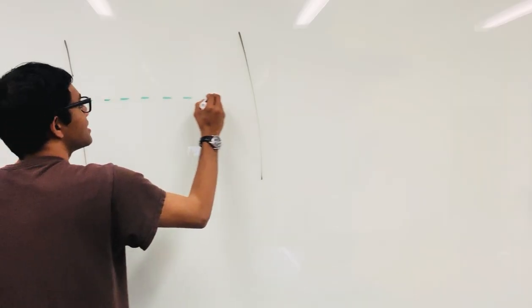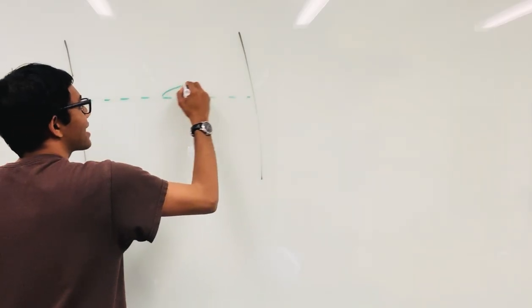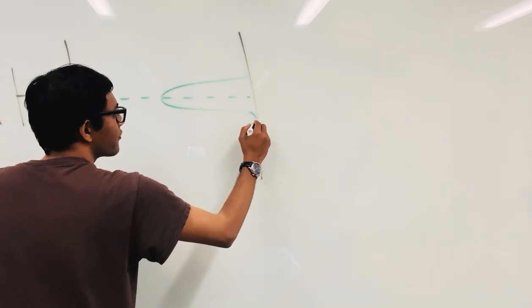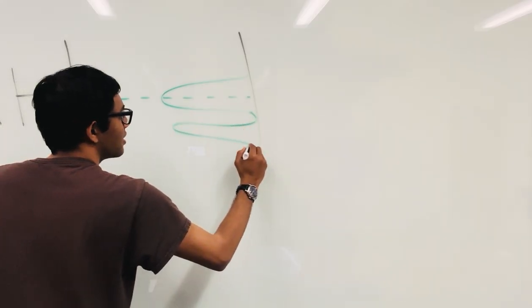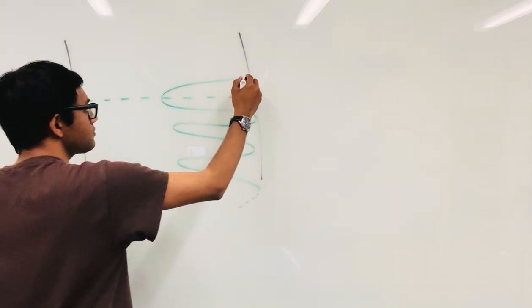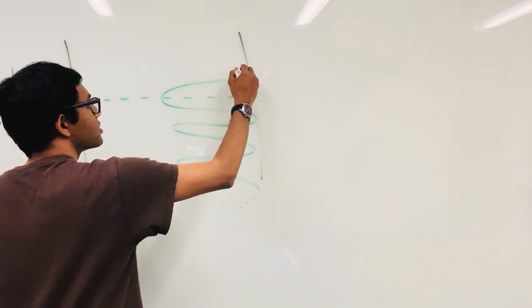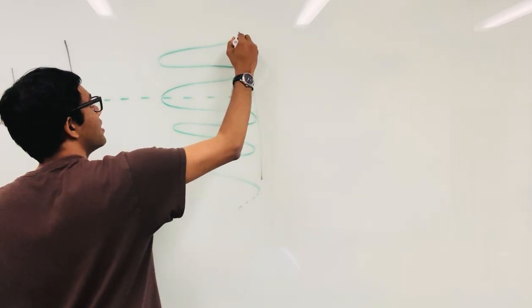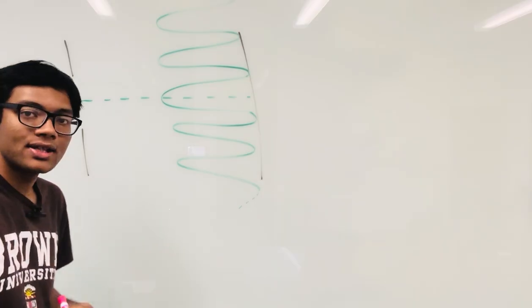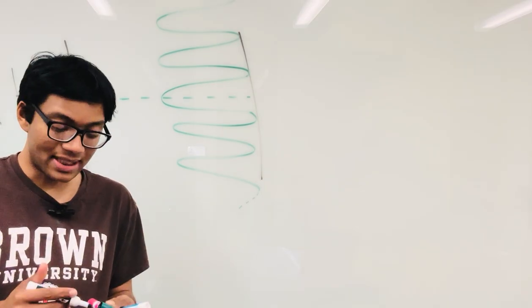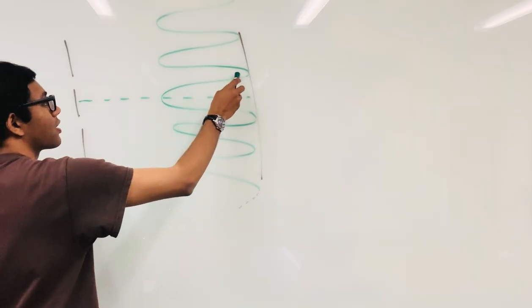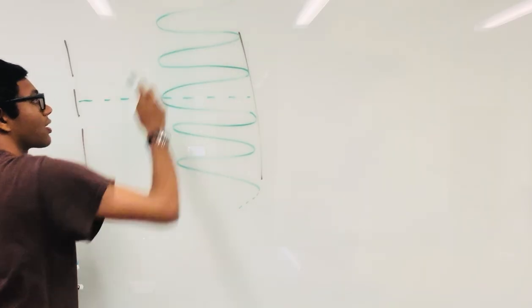So the light beam approaches the double slit, goes through, and hits the back wall, creating an interference pattern. Along the center of the detector there is a maximum constructive interference, and then there's a dark fringe, then another maxima, dark fringe, another maxima, so on and so forth. Essentially you have this alternating series of bright and dark fringes.